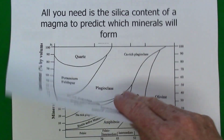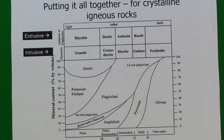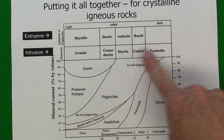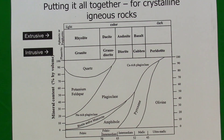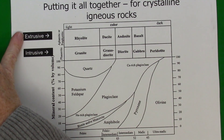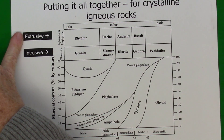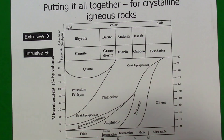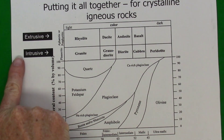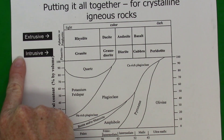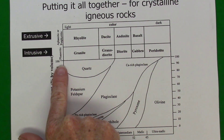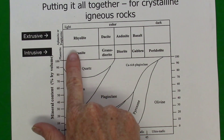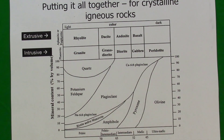Putting composition and texture together for crystalline rocks, we have names for all of these rocks. Extrusive rocks, if they form a crystalline texture, are either aphanitic or porphyritic, and their names change based on silica content. If the rock formed intrusively — magma cooling below the surface — they're always crystalline with phaneritic texture, and the rock name again changes based on the silica content.